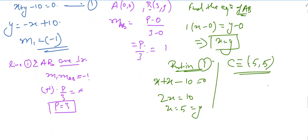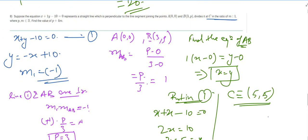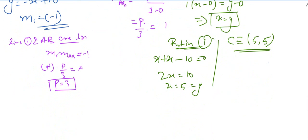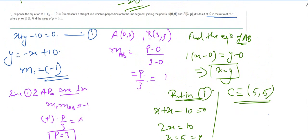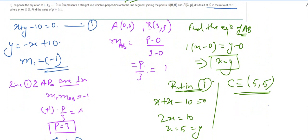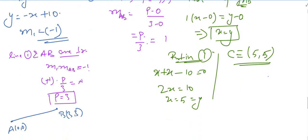Now we need to find m. It is said that A(0,0) goes up to B(3,3), and at C it is divided in the ratio m to 1.